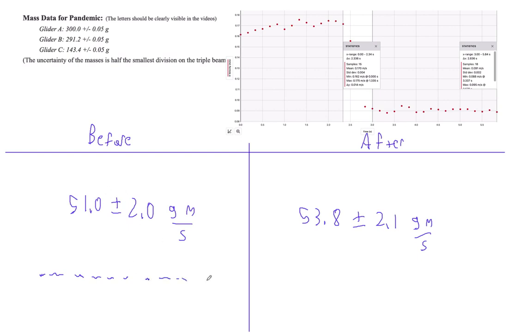Before, the momentum was 51.0 gram meters per second, and after it was 53.8 gram meters per second. I think we should say plus or minus 2.0, plus or minus 2.1.